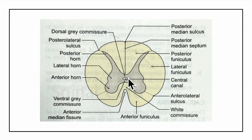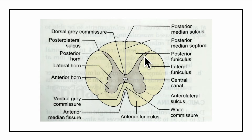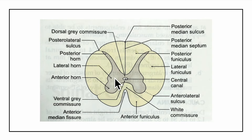There is a dorsal grey commissure and a ventral grey commissure. The grey matter comprises one posterior horn and one anterior horn on each side throughout the entire extent of the spinal cord. Only in the T1 to L2 and S2 to S4 segments is there an additional lateral horn, present for the supply of the viscera. This lateral horn is part of the autonomic nervous system.